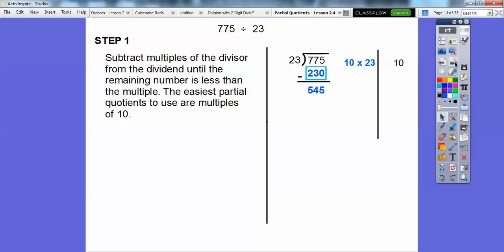Now since there's another 230 we can fit in there, let's do another 10 times 23 right here is another 230. So then we'll subtract those and that gets us 315. We can get another 230 on that. So let's do another 230.